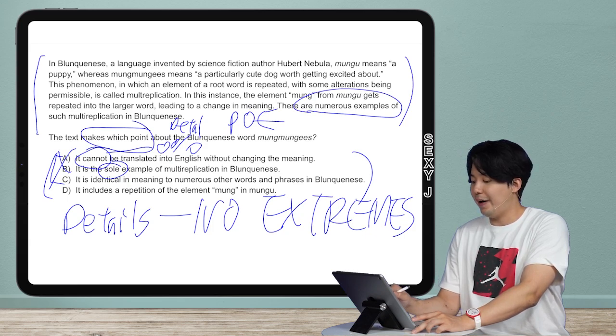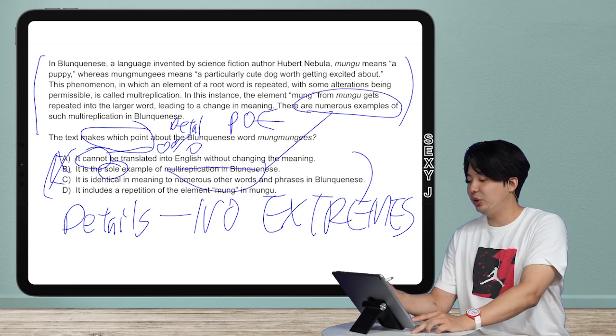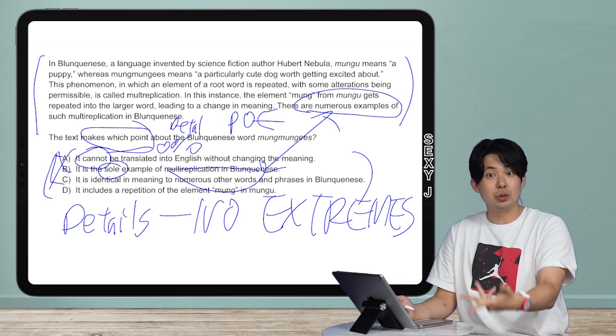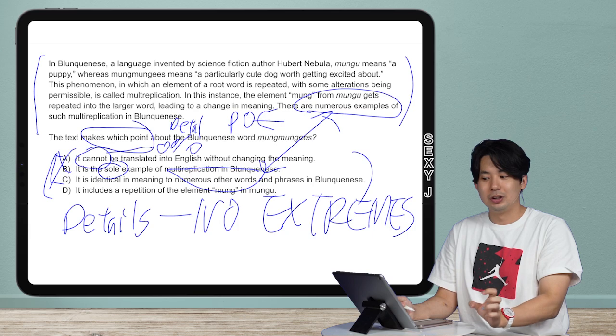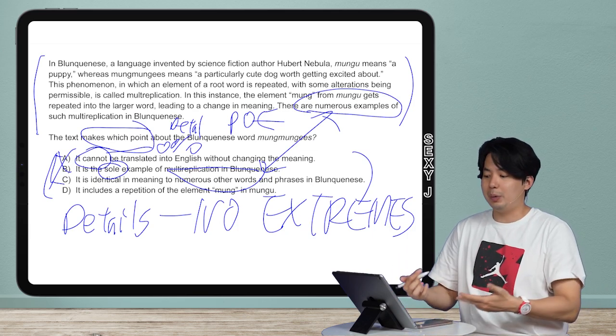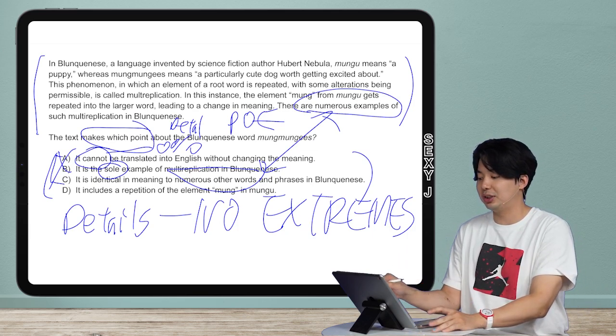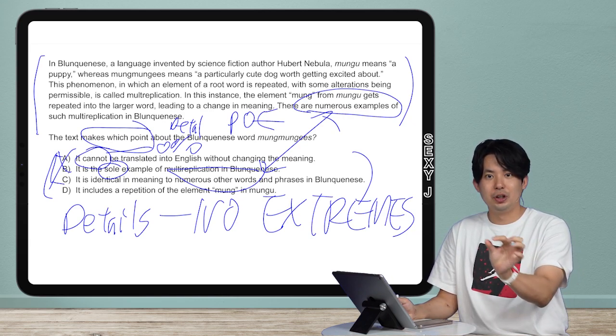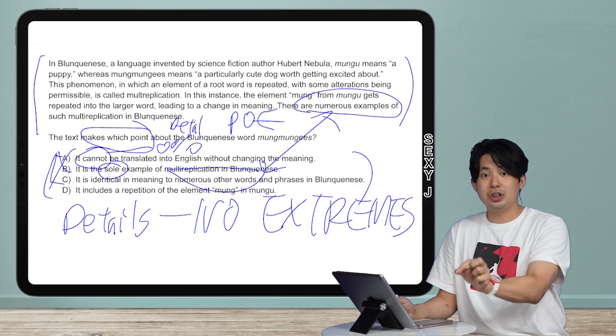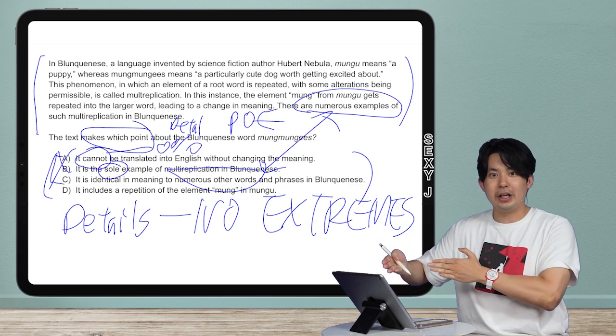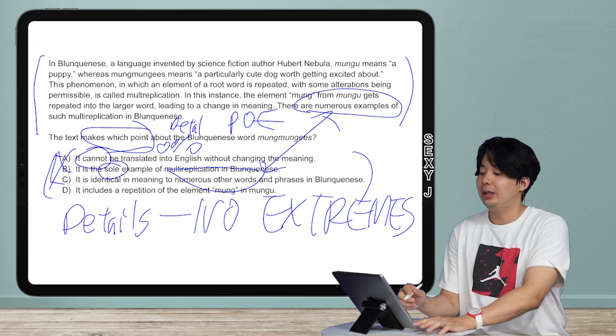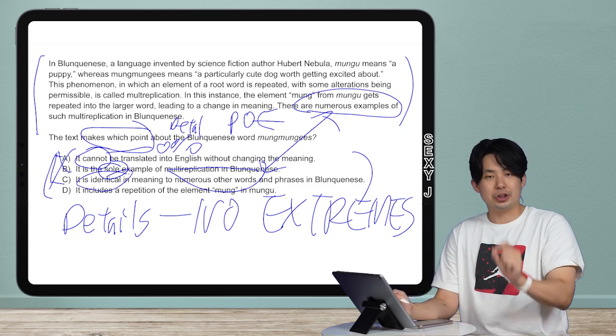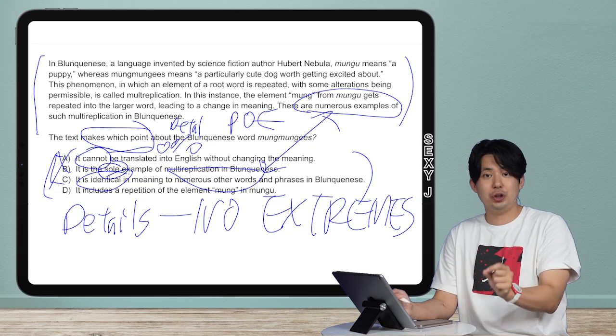So if you're rushing, you might pick this one just because this phrase sounds so much of that phrase. But you cannot, as you guys know, you cannot say this is the answer because of this part. You can only say this is the answer because every single part of the answer choice works. So this word right here, 'identical,' doesn't sound like an extreme, but it is an extreme answer in terms of SAT. Identical is an extreme answer. If the word was 'similar,' that's okay.